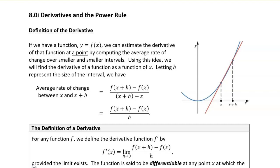For example, if we have a relationship where distance is a function of time, then the derivative of that function tells us how distance changes as time changes. And so that's the velocity. For example, if the distance was given in miles and the time is in hours, then the units of the derivative would be in miles per hour.